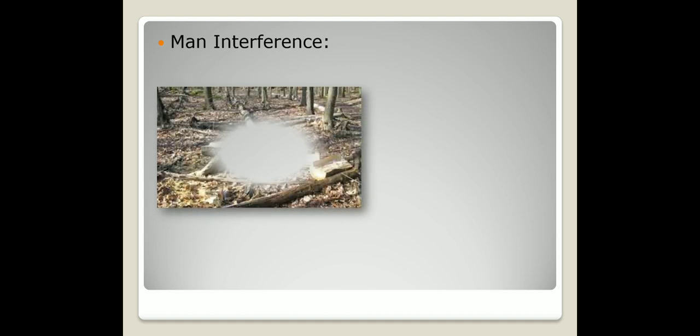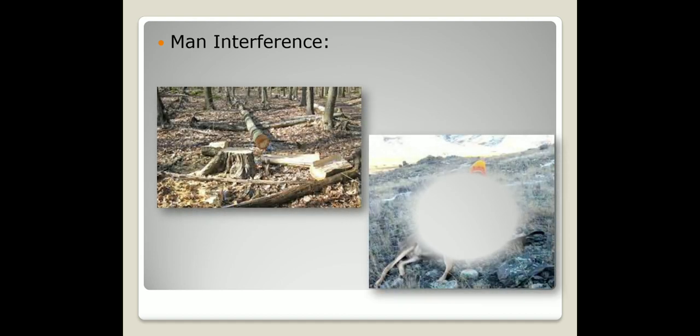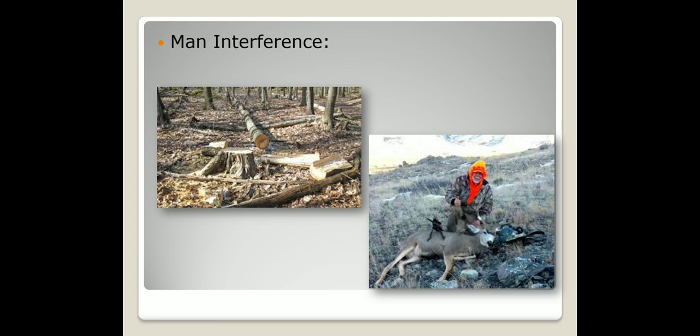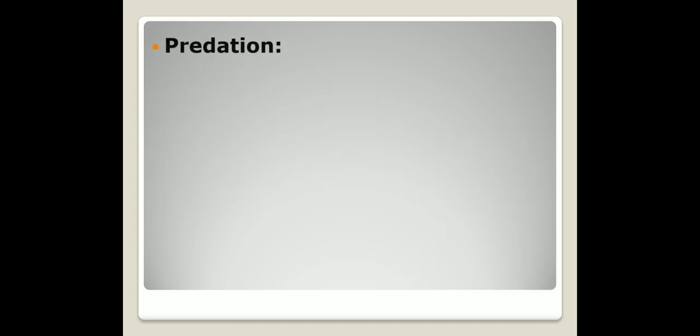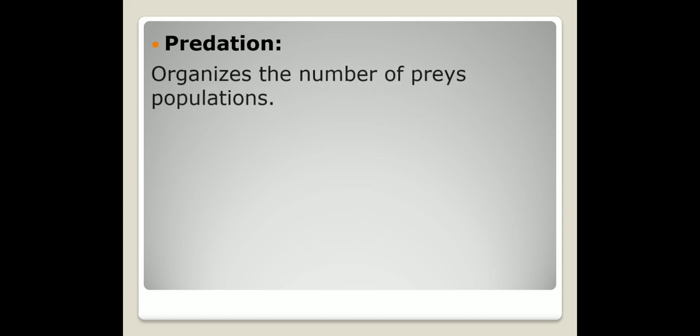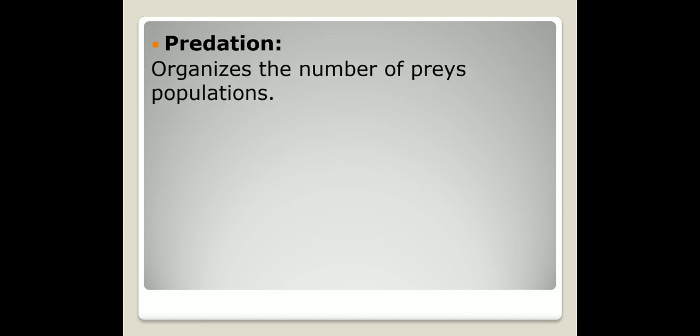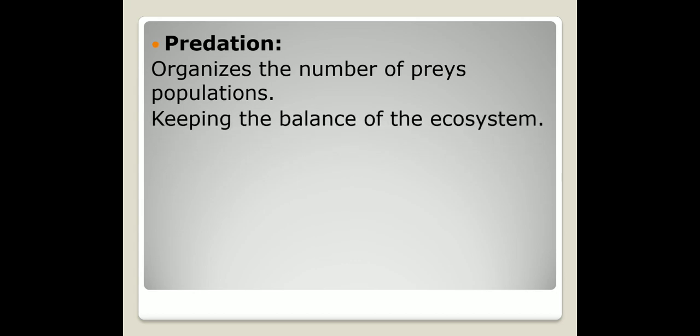Also, human interference in the environment can affect the environmental balance by cutting trees or hunting some rare animals. But there are some food relationships that can keep the environmental balance, like predation, which organizes the number of prey populations and gets rid of the very weak ones while keeping the strong ones, so predation can keep the balance of the ecosystem.